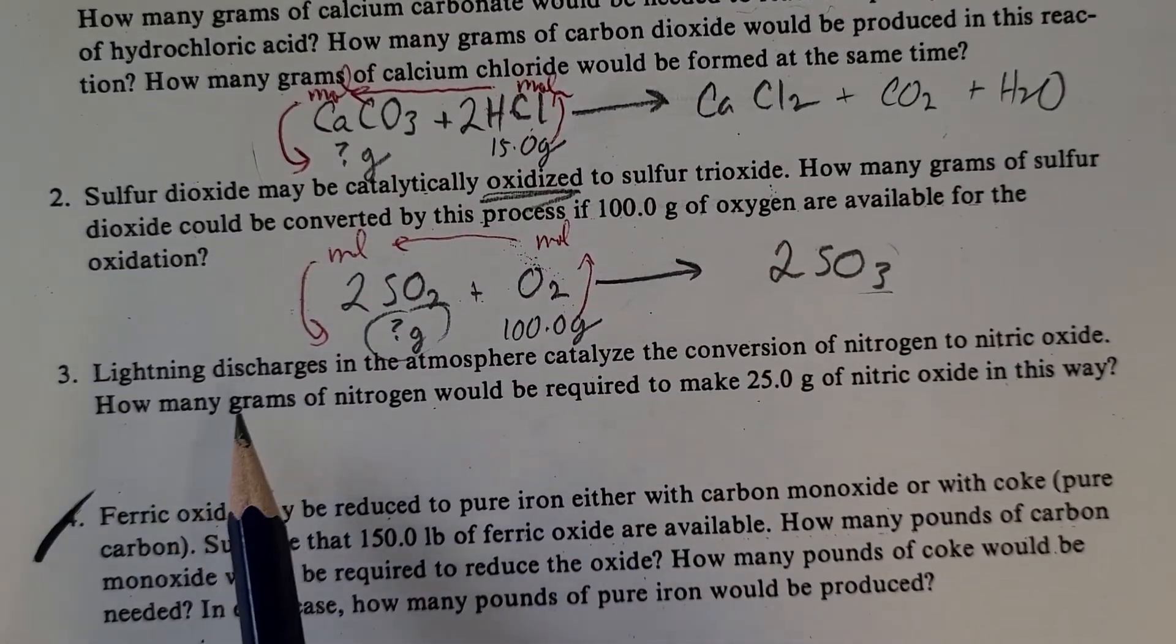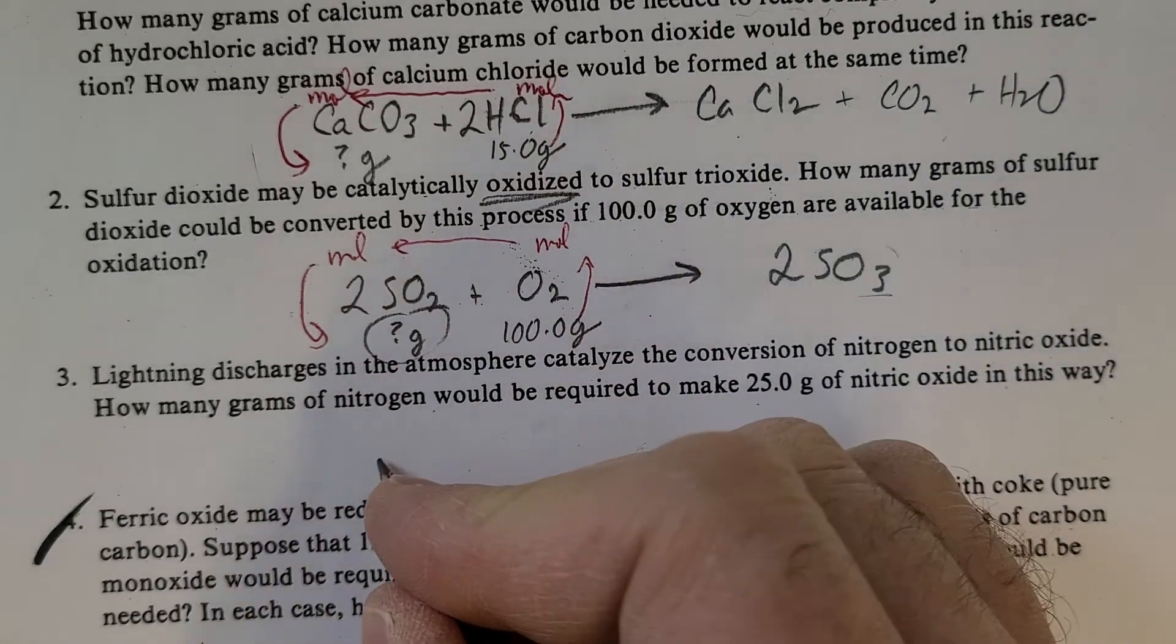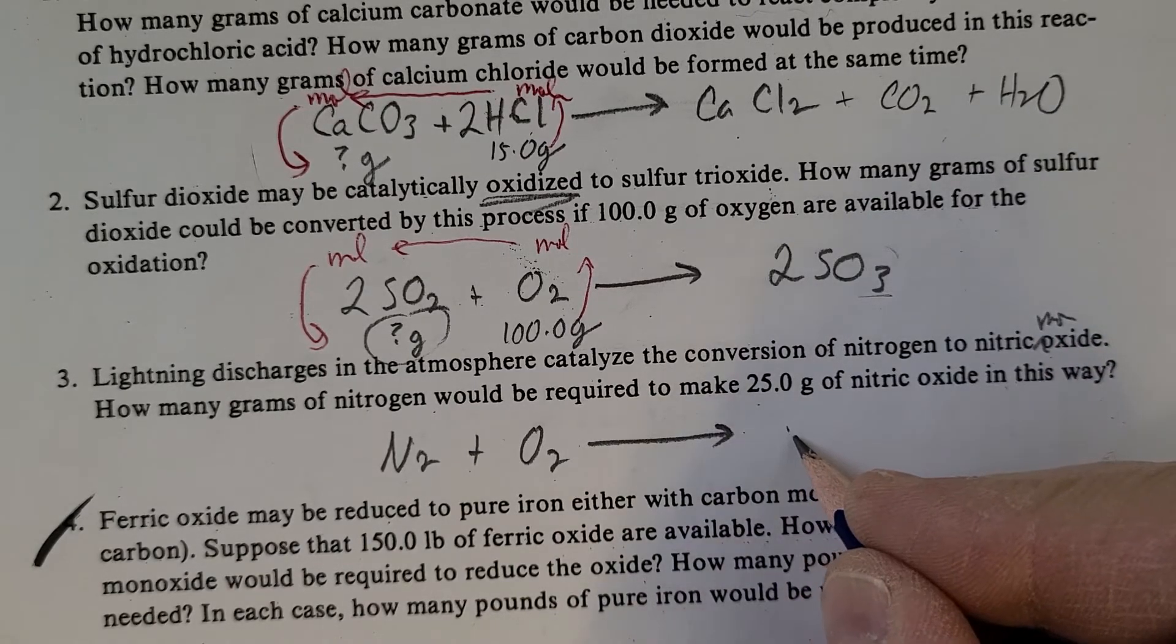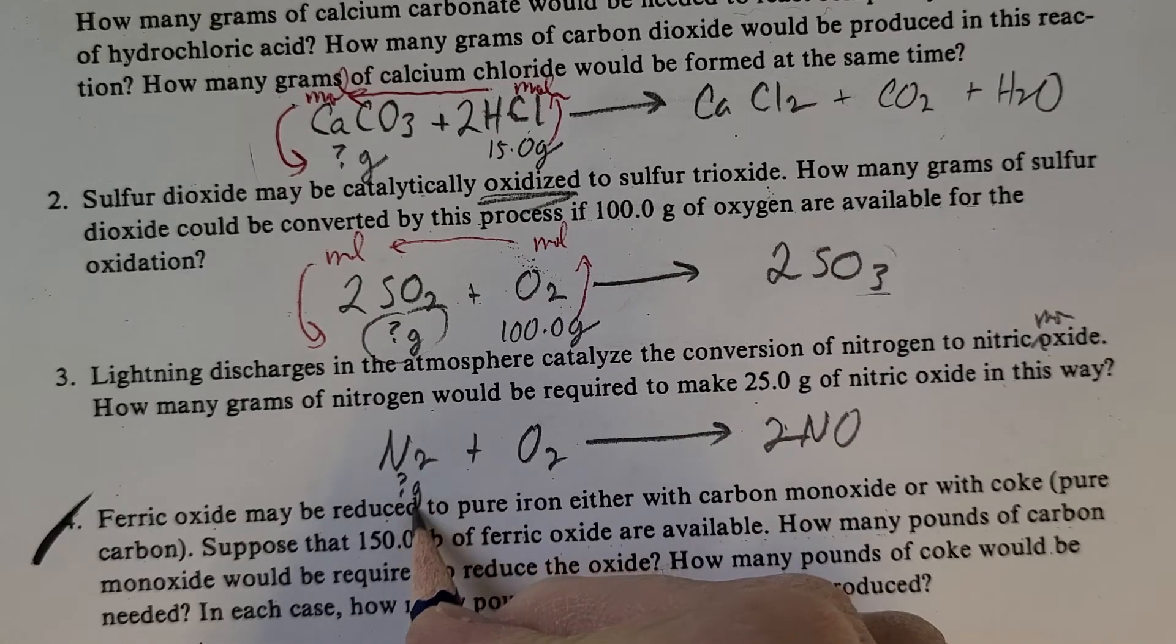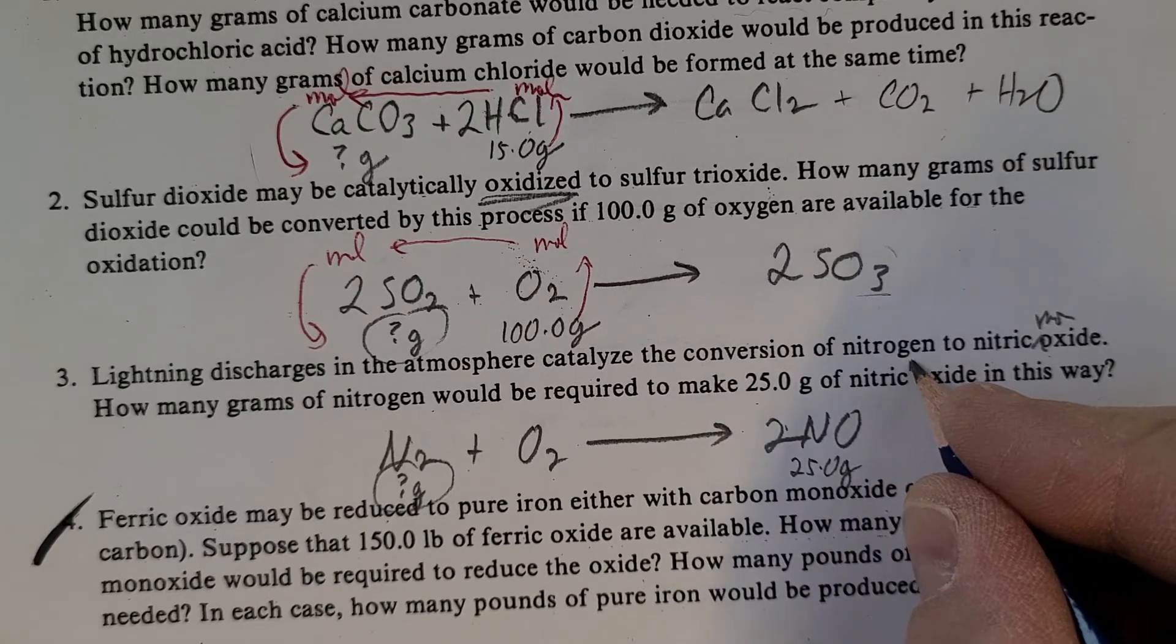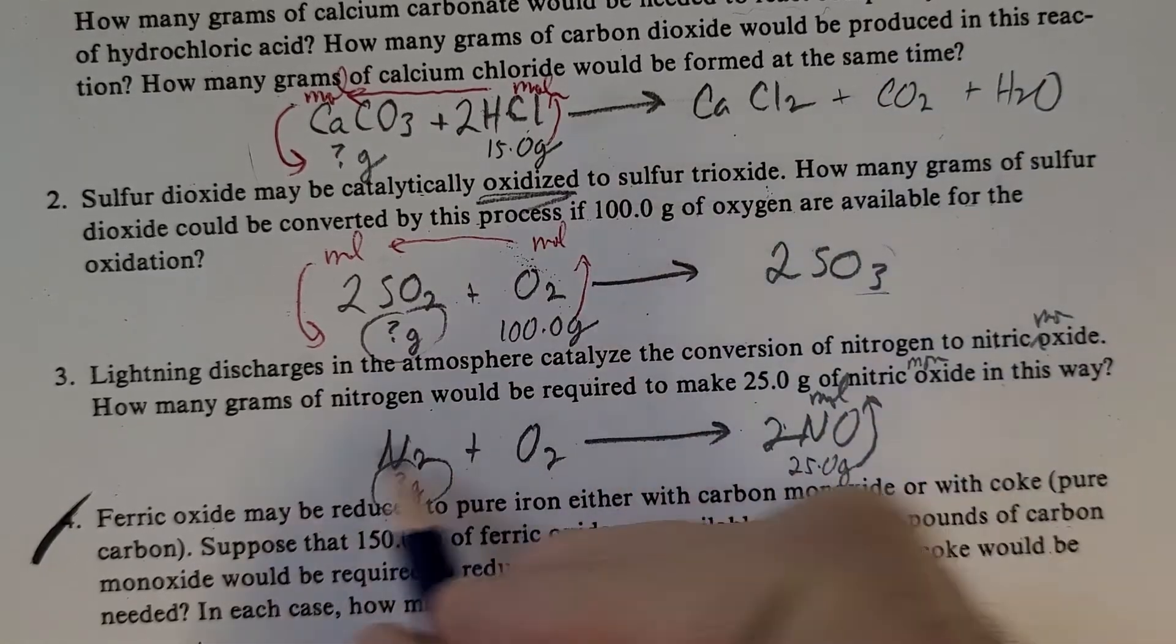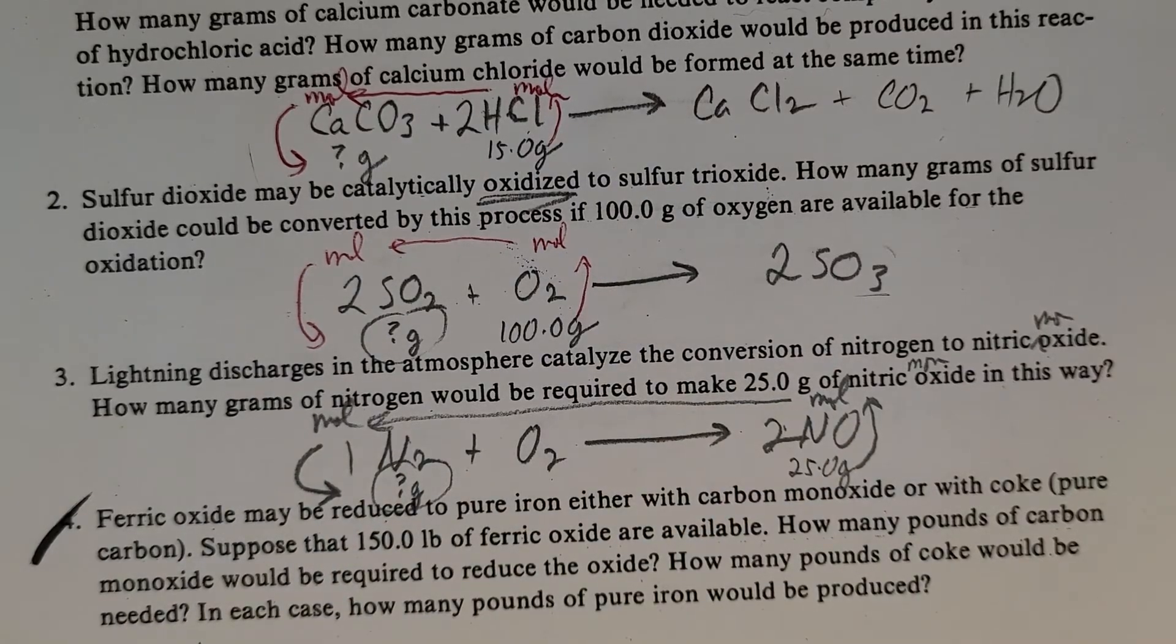All right. Next one, I'll give you a hint about this one. Lightning discharges in the atmosphere catalyzing the conversion of nitrogen to nitrogen oxide. Nitrogen, it should say nitrogen monoxide there. The mon that got dropped off somehow. And of course, we're going to need two there. How many grams of nitrogen are required to make 25 grams of nitrogen monoxide in this way? Okay. So again, we're going to have to figure out how many moles we have. Then use the 2 to 1 ratio to figure out how many moles of nitrogen we have. And then we can convert to grams. So two-stepper.